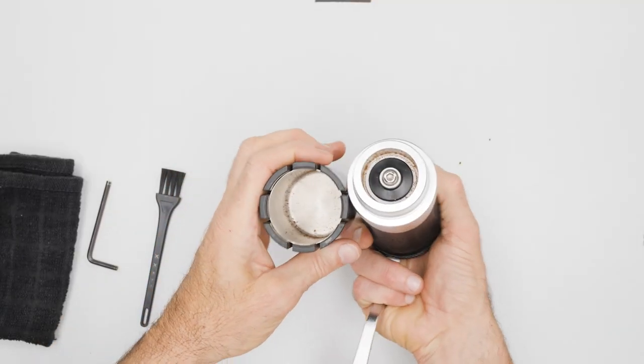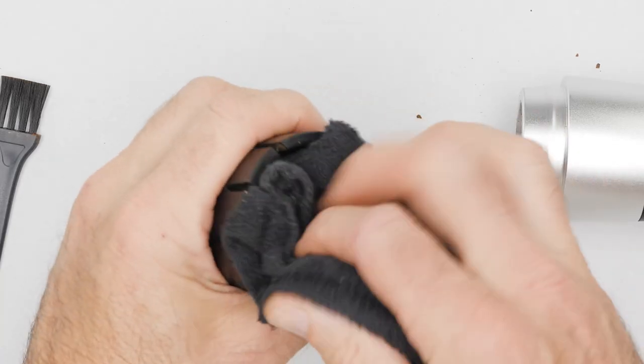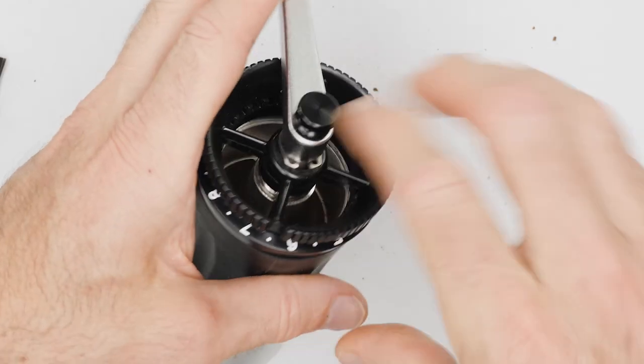When cleaning the Royal, only use a dry towel. Water, even moisture, can lead to surface oxidation on the steel burrs.